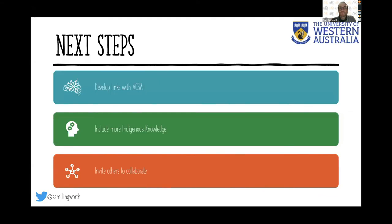The next steps for this project are for us to continue to develop links with the Australian Citizen Science Association. Our students' top essays are going to be featured as blogs on the website, which we're really excited about. We need to include more Indigenous knowledge, and we're working with the School of Indigenous Knowledge and the School of Indigenous Studies at the University of Western Australia to do this in a meaningful way, not just as a token gesture, because it's vital that students and lecturers understand how important this is for the construction of knowledge. And there's a general invitation for others to collaborate — if you want to get involved in this program, speak, or find out about it, please get in contact.